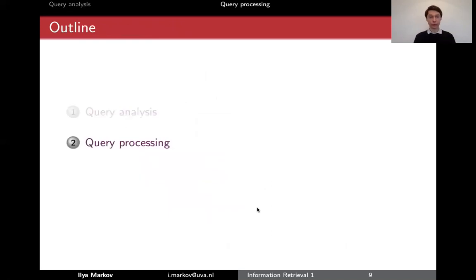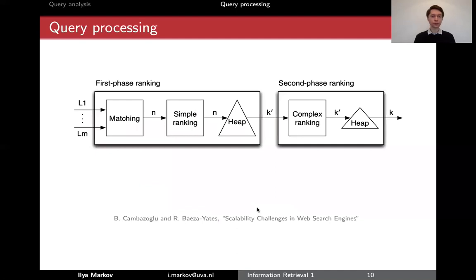Then you can process this query using your index. It's important to mention that depending on the search system, especially in complex search systems like web search engines, we usually have two phases of ranking. One is a relatively simple phase where you do kind of filtering. First you do matching, which is Boolean - you have a query and all your documents and you only select those documents that contain query terms. There's no ranking yet. Then you do a simple ranking with some very simple techniques.